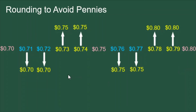Notice that half of these situations involve rounding down and half involve rounding up. This makes it fair for both the store and the customer. Half the time the customer spends a little less because of the rounding, but half of the time the customer spends a little more, and these cancel out.